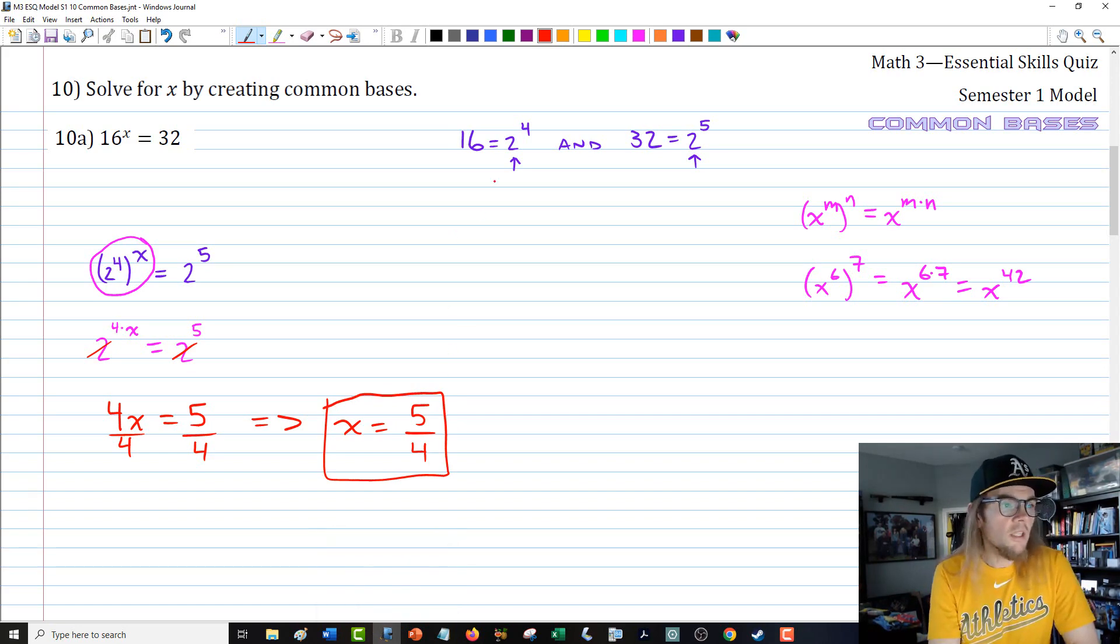If 4x equals 5, we can divide both sides by 4, and we get that x is equal to 5 fourths. There is the power that will get us to have this equation be true.